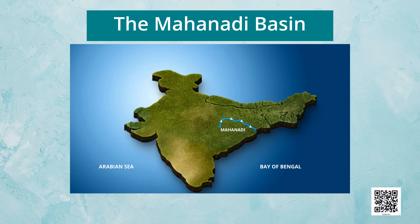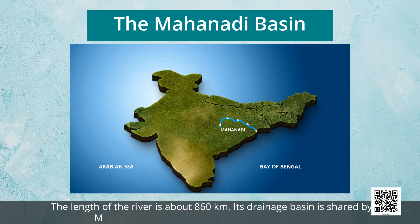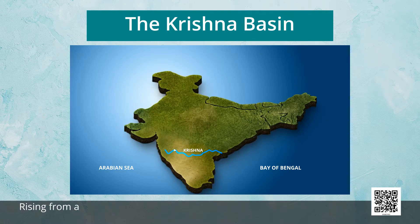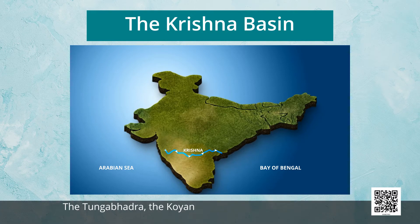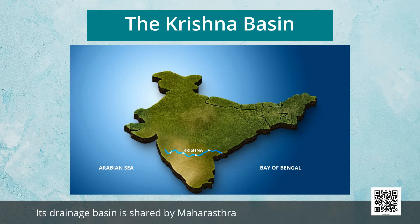The Mahanadi rises in the highlands of Chhattisgarh and flows through Odisha to reach the Bay of Bengal. The length of the river is about 860 kilometers. Its drainage basin is shared by Maharashtra, Chhattisgarh, Jharkhand, and Odisha. Rising from a spring near Mahabaleshwar, the Krishna flows for about 1,400 kilometers and reaches the Bay of Bengal. The Tungabhadra, Koyna, Ghatprabha, Musi, and Bhima are some of its tributaries. Its drainage basin is shared by Maharashtra, Karnataka, and Andhra Pradesh.